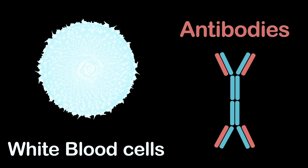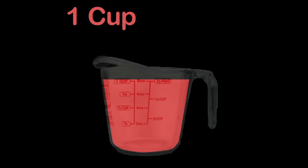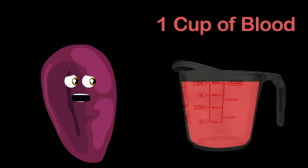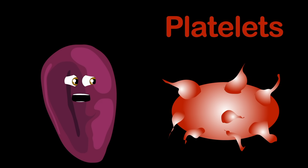Both white blood cells and antibodies fight sickness and disease, enabling them to be cleared from the circulation in your body. The spleen stores up to a cup of blood for your safety, ready to be released if there's a significant loss of blood. Many platelets are also stored within the blood in the spleen to help form blood clots and prevent further blood loss.